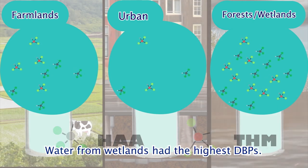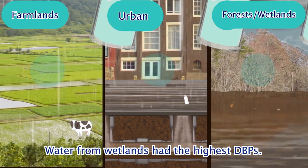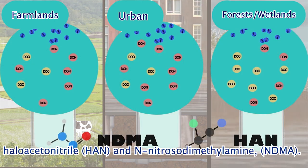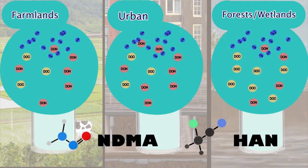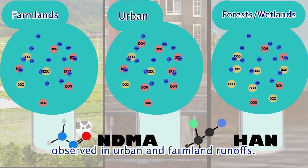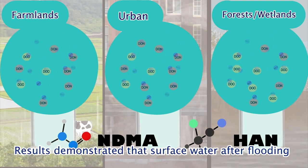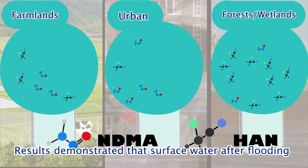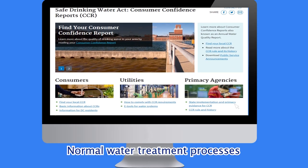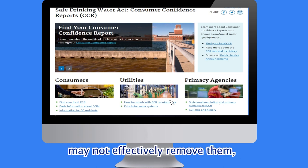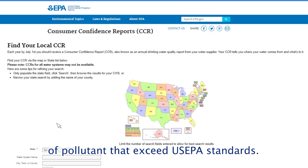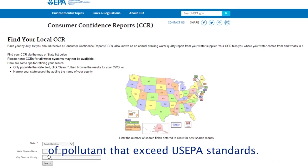Water from wetlands had the highest DBPs. There are a variety of DBPs — haloacetonitrile and N-nitrosodimethylamine are two chemicals more commonly observed in urban and farmland runoffs. Results demonstrated that surface water after flooding or hurricane events can have high loads of pollutants, and normal water treatment processes may not effectively remove them. Treated water can contain significant levels of pollutants that exceed US EPA standards.